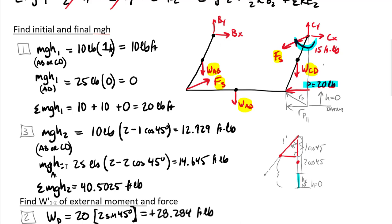I can find that the elevation from the top is going to be one times cosine of 45 degrees. Therefore the distance all the way from the datum down here up to that point is going to be 2 minus 1 times cosine of 45 degrees. Taking that times 10 pounds, I get 12.93, doing the same kind of steps for my MGH2 of AD.